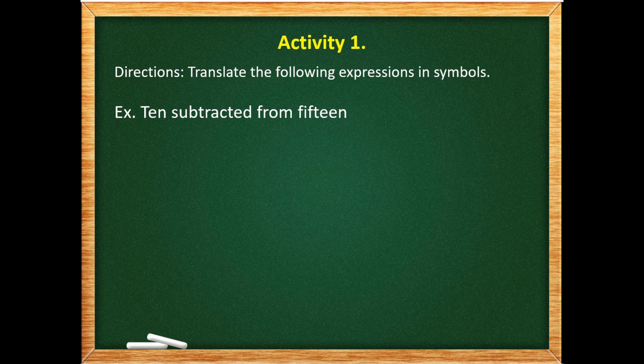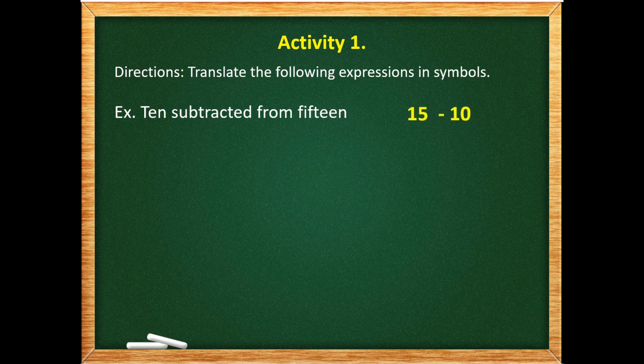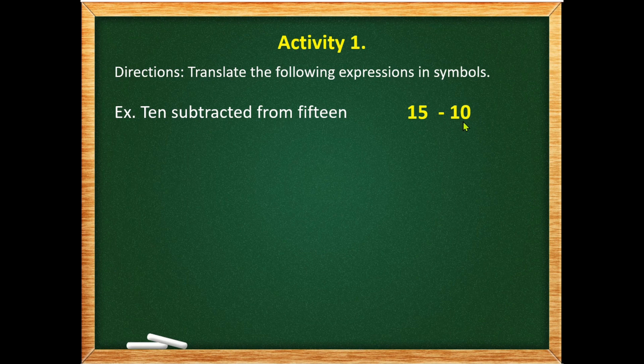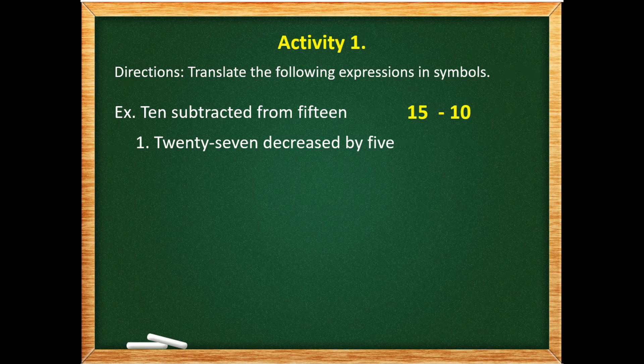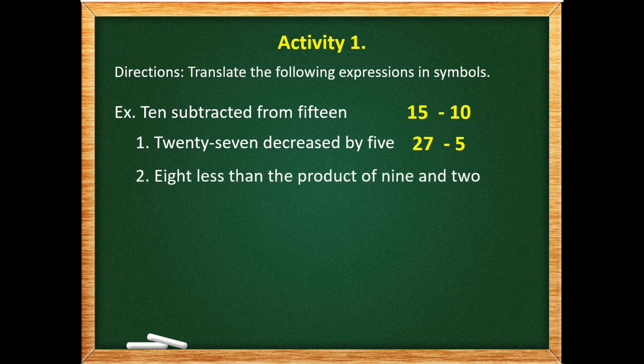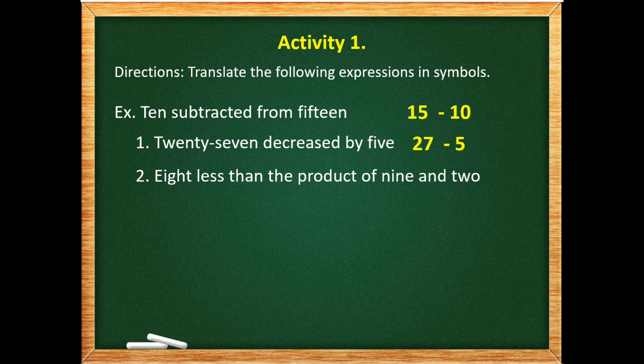So it means that we have 15 as our minuend, minus 10 as our subtrahend, because of the word from. So for number 1, we have 27 decreased by 5. So the answer is 27 minus 5. Number 2, 8 less than the product of 9 and 2. The answer is quantity 9 times 2 minus 8.